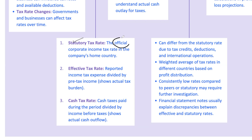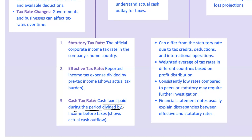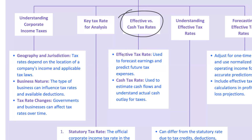Think of the statutory rate as the official rate and the effective tax rate as the real-world rate. The cash tax rate is another concept — it's about the actual cash paid during a period divided by pre-tax income. While the effective tax rate helps in forecasting earnings, the cash tax rate is more about understanding cash flows. For example, a US-based company earning 50% of its income domestically and 50% in a country with a lower tax rate — if the US rate is 21% and the foreign rate is 10% — will have an effective tax rate as a weighted average of these rates.